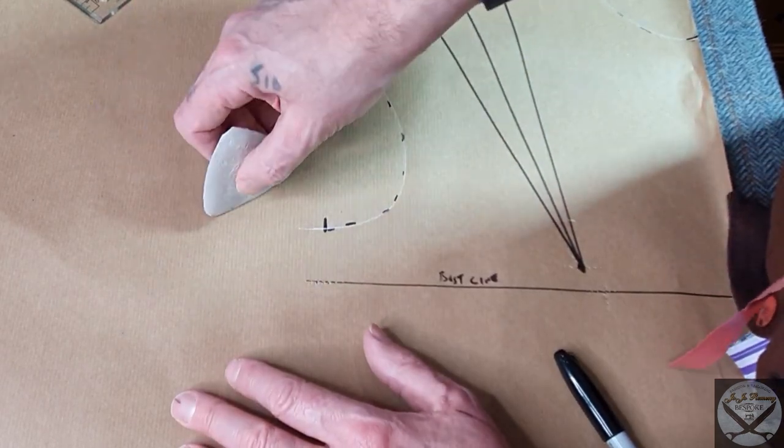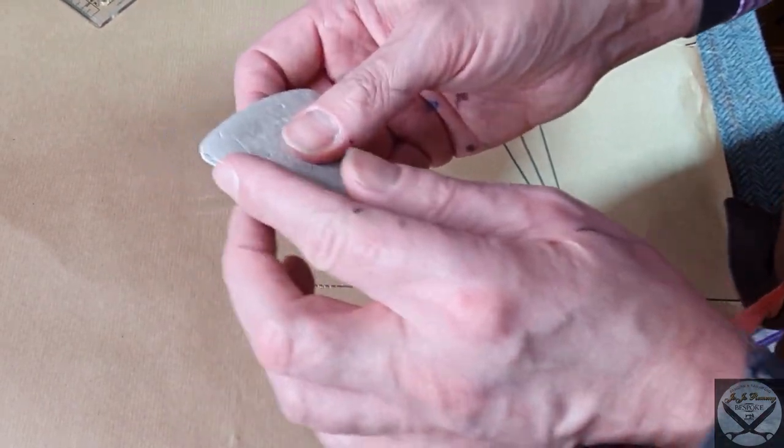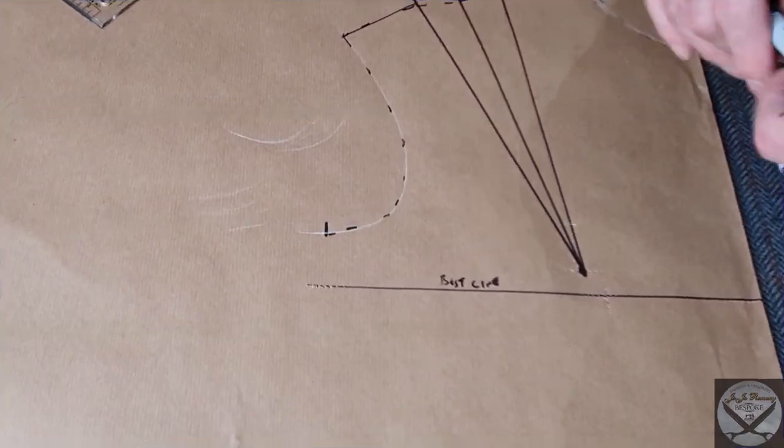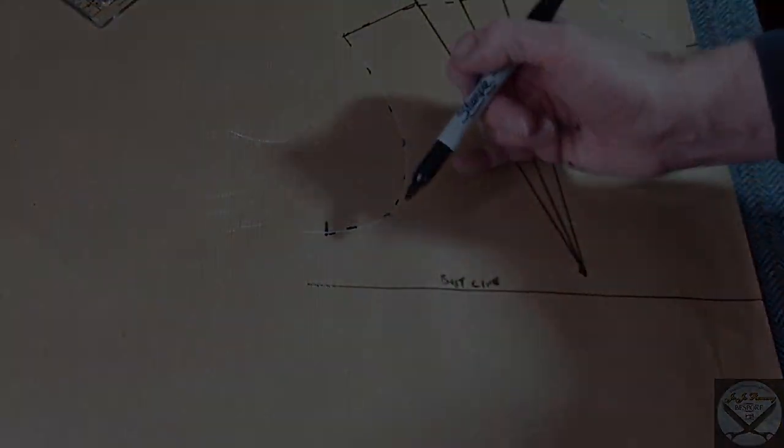Just practice on a piece of paper, getting lines using the straight edge. Make sure it's sharp. So there we go. Now, we'll just draw our waist dart in.